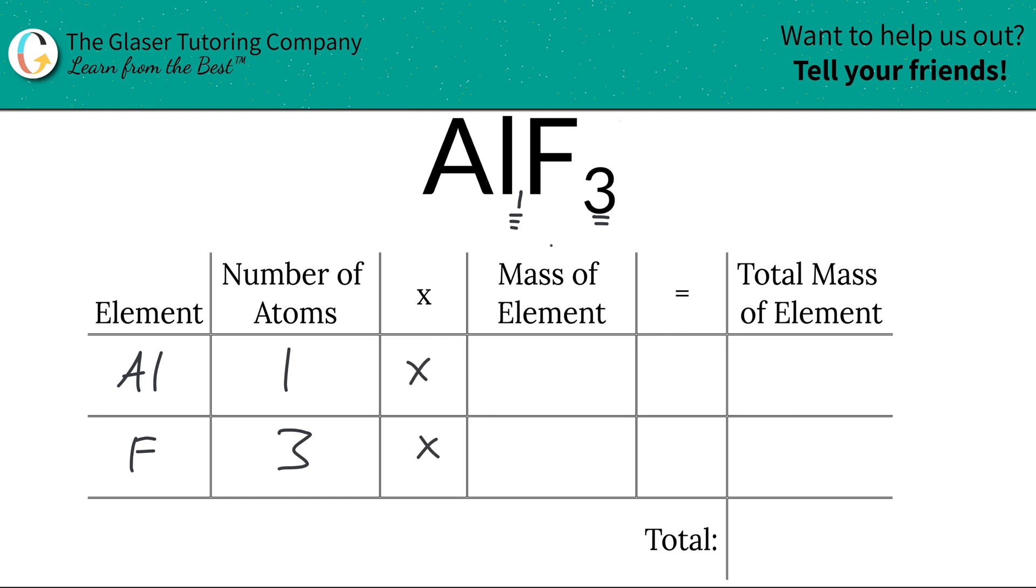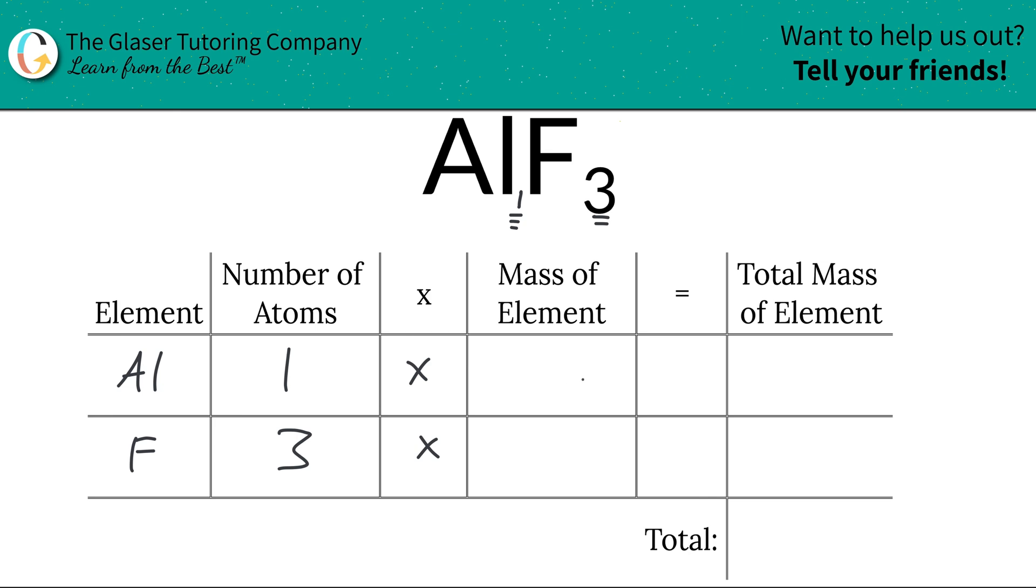We're going to take those numbers of atoms, and then we're going to multiply it by the mass of each particular element. These masses are found on the periodic table, so let's take a look.